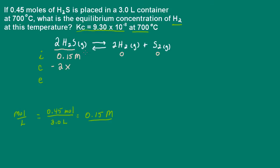At the same time our reactant concentration is decreasing, our product concentrations will increase. In the case of hydrogen, we have the coefficient 2, so it increases by 2X. Sulfur increases by X since its coefficient is 1. At equilibrium, the concentration of H2S is 0.15 minus 2X, hydrogen is 2X, and sulfur is X.